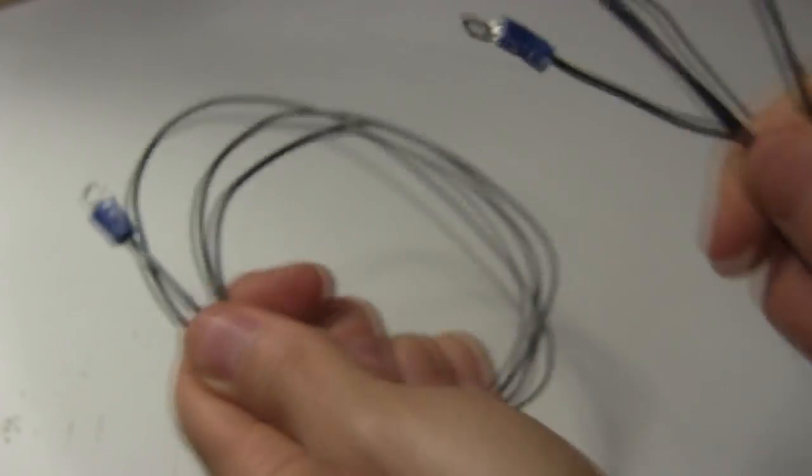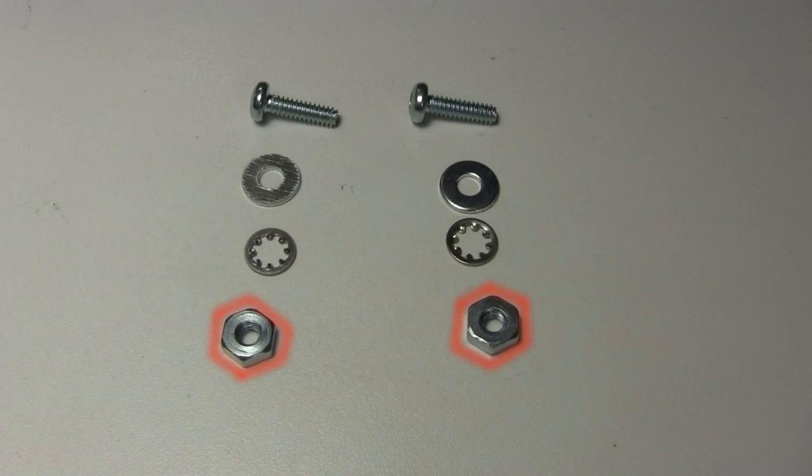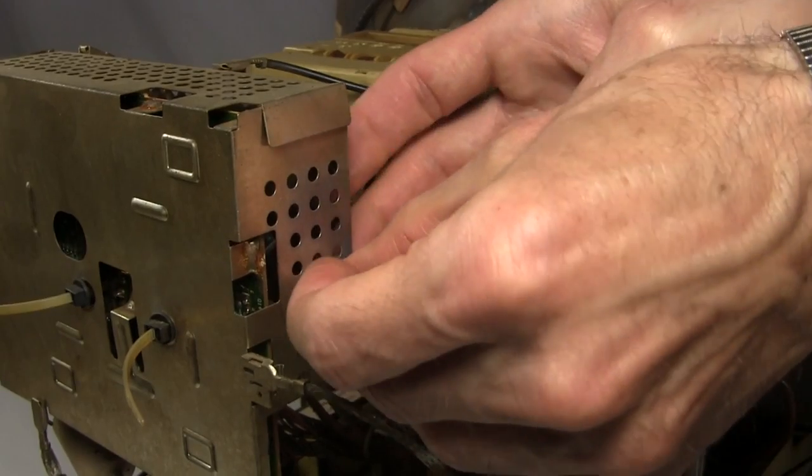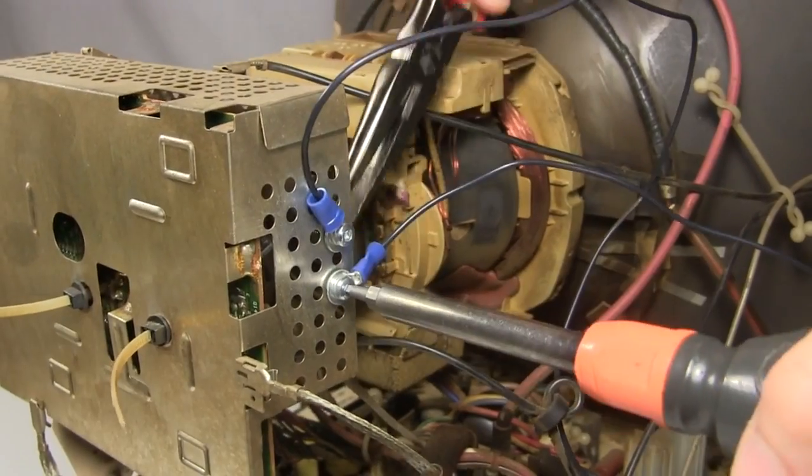So I prepare two long wires by putting connectors on one end of each. I then get two sets of nuts, bolts, washers, and star washers, and bolt the wires through existing holes in the metal plate, making sure to make good electrical contact.